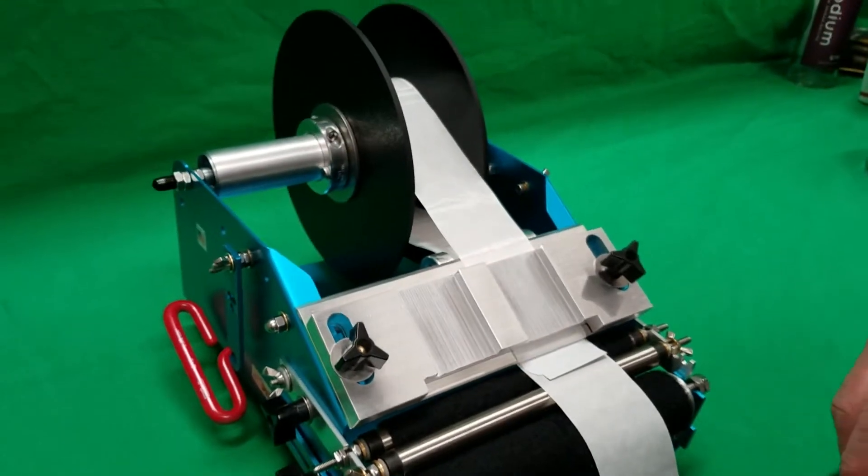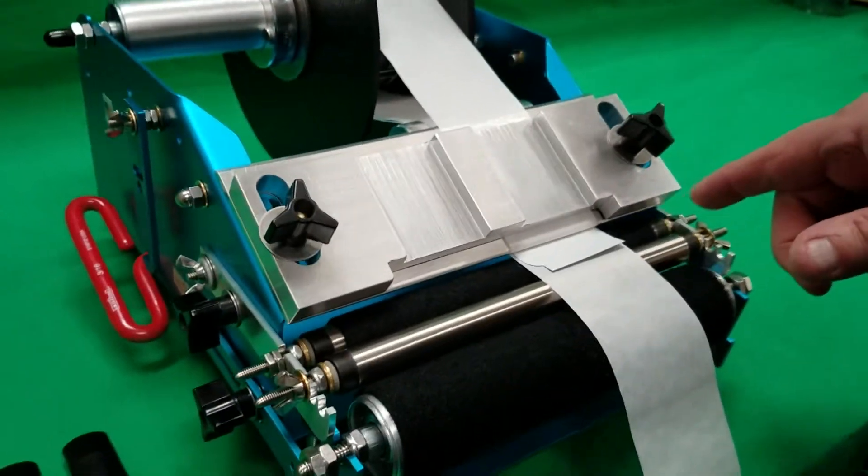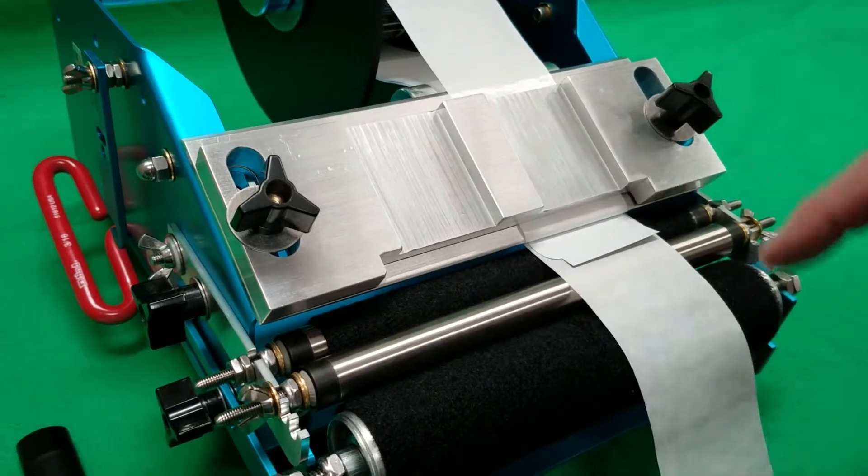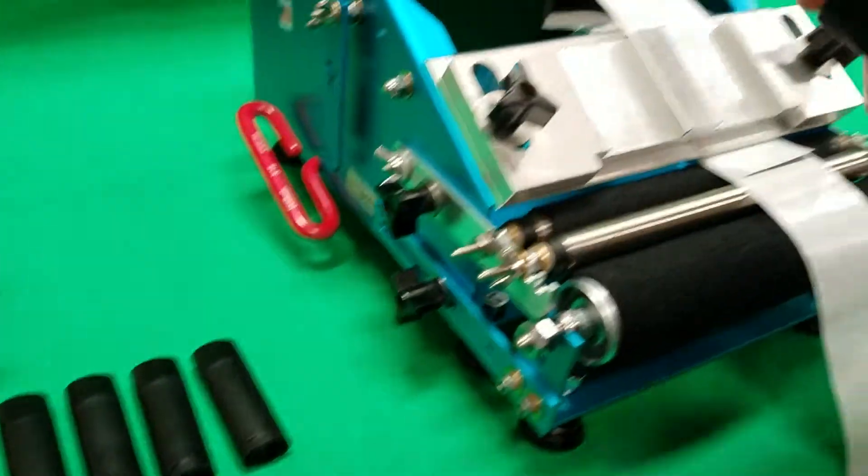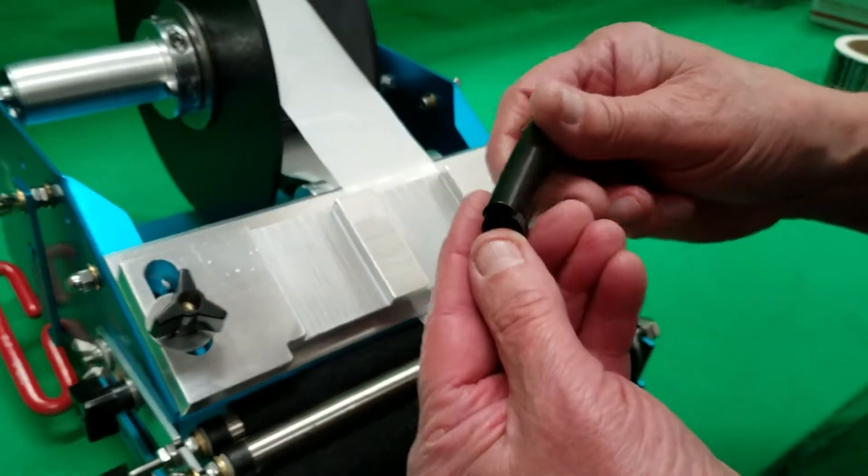This is the Race Junior with a lip balm and small vial adapter on it and a custom nesting plate to handle these oval lip balms.